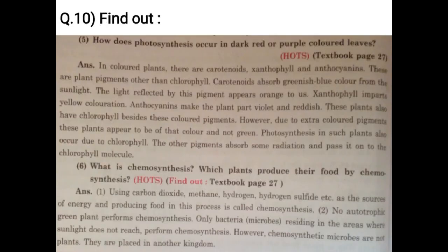How does photosynthesis occur in dark red or purple colored leaves? In colored plants there are carotenoids, xanthophyll and anthocyanins. These are plant pigments other than chlorophyll. Carotenoids absorb greenish-blue color from sunlight; the light reflected by this pigment appears orange to us. Xanthophyll imparts yellow coloration. Anthocyanins make the plant part violet and reddish. These plants also have chlorophyll besides these colored pigments. However, due to extra colored pigments, these plants appear to be of that color and not green. Photosynthesis in such plants also occurs due to chlorophyll, while the other pigments absorb some radiation and pass it onto the chlorophyll molecule.